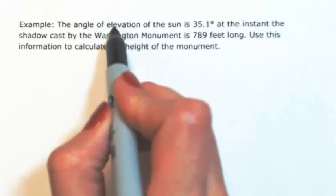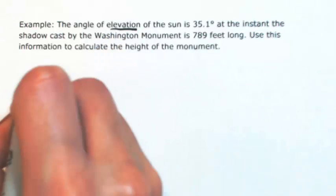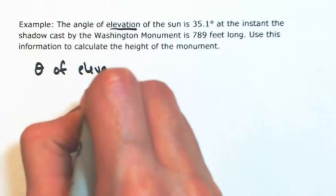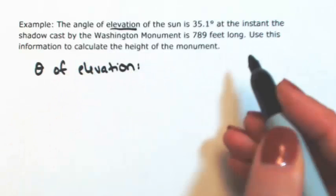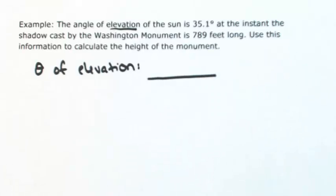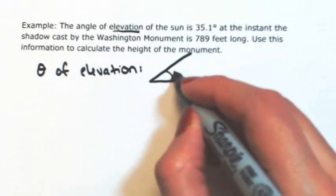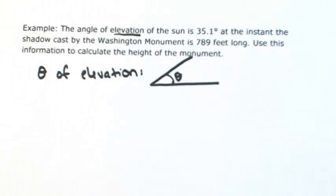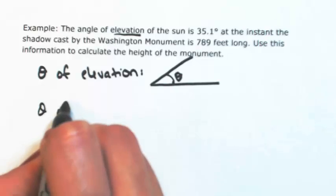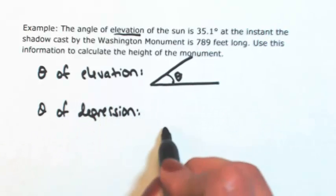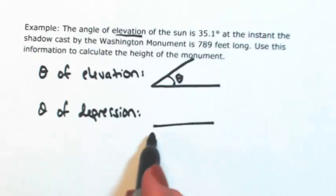The angle of elevation, let's talk about that real quick. If I have an angle theta of elevation, elevation means that you're going up, so the angle would be near the bottom. As opposed to an angle of depression, that would be an angle that's moving down.